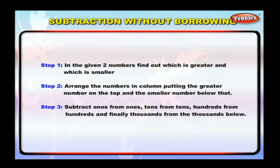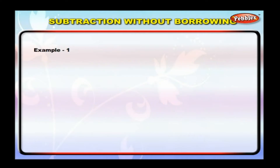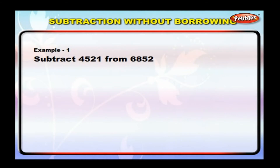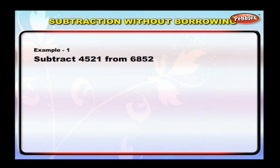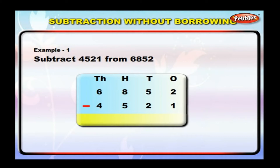And finally, thousands from thousands. Let us see an example. Subtract four thousand five hundred and twenty-one from six thousand eight hundred and fifty-two. Six thousand eight hundred and fifty-two is the greater number. Arrange them in a column, one below the other. Now start subtracting.